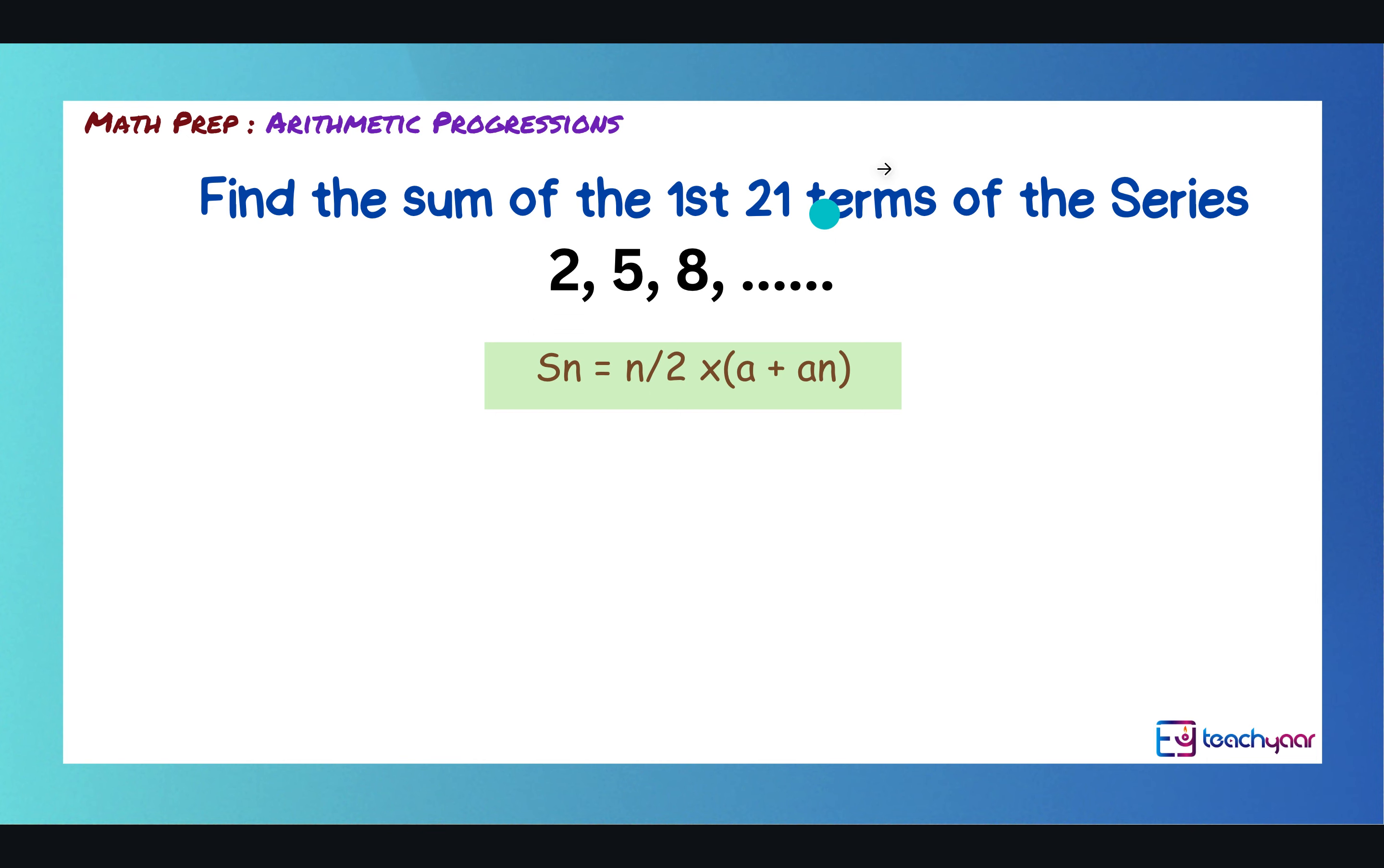So, now we have to find the sum of the first 21 terms of this series. Okay. And it is an arithmetic progression as well. So, same formula, sum of the n terms, first n terms is n/2 times (a + an).